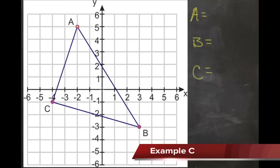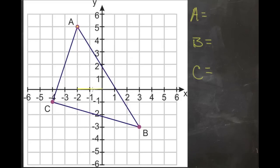For A, we figure out how far we go on the x-axis. We go back negative 1, negative 2 points, so our x-coordinate is -2. Our y-coordinate is 1, 2, 3, 4, 5. So we have (-2, 5) as our point A.